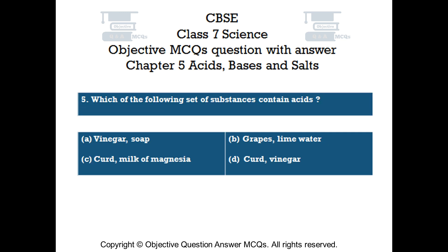Question number 5. Which of the following set of substances contains acids? Option A, vinegar and soap. Option B, grapes and lime water. Option C, curd and milk of magnesia. Option D, curd and vinegar.